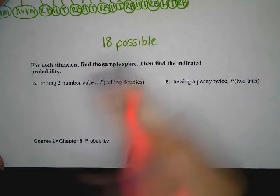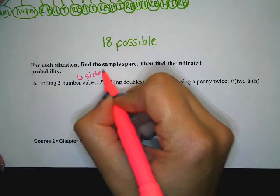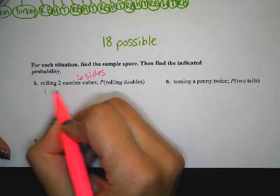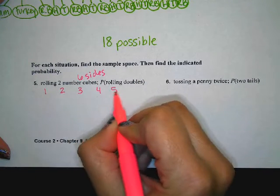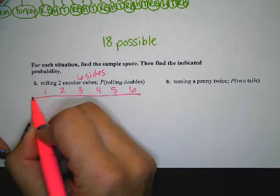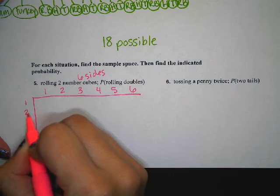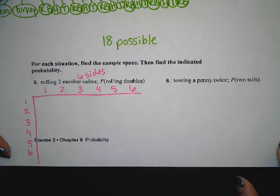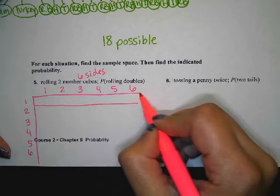Let's use a chart for this one. A number cube has six sides, one through six. So we're going to label one side of the chart one through six, and the other cube also one through six. Then let's make our table.